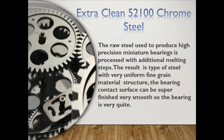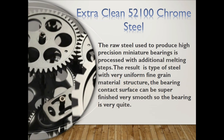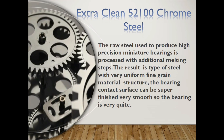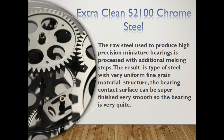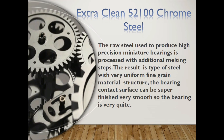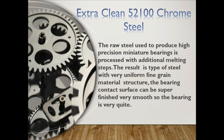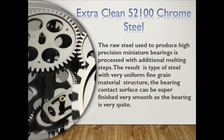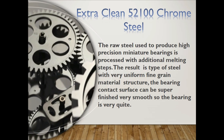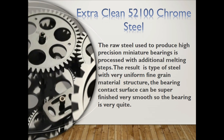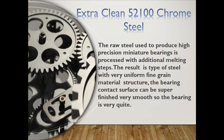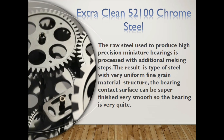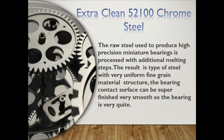Extra clean 52100 chrome steel. The raw steel used to produce high-precision miniature bearings is processed with additional melting steps. The result is a type of steel with a very uniform, fine-grained material structure. The bearing contact surface can be super-finished very smooth, so the bearing is very quiet.